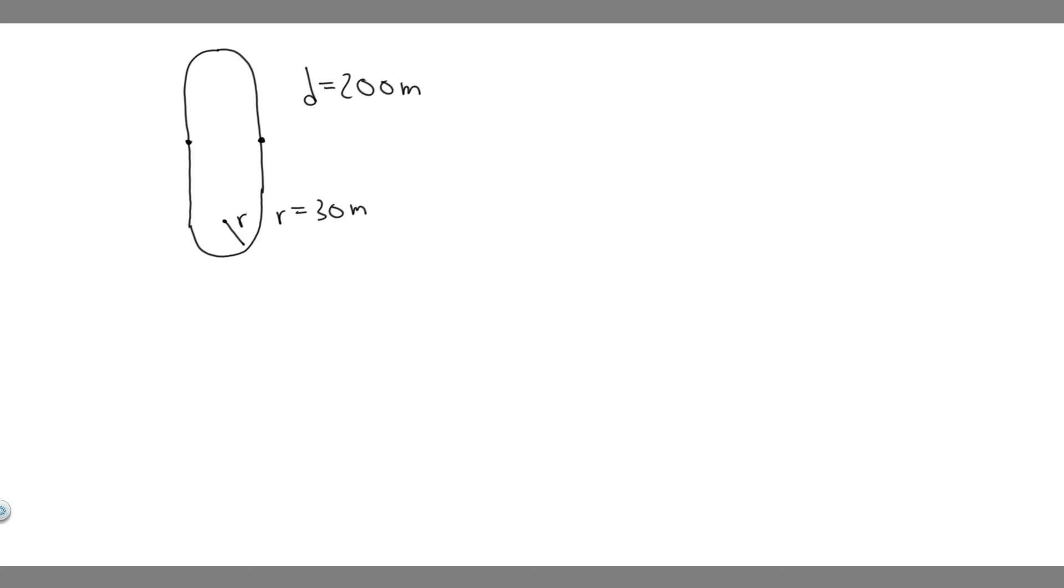We know they're going to do it in a time of 23.2 seconds. And we know they're going to run around this circular part with a radius of 30 meters. So what we're trying to find is the centripetal acceleration as he runs around this part. We call that a sub c or the centripetal acceleration equals question mark because that's what we're solving for.